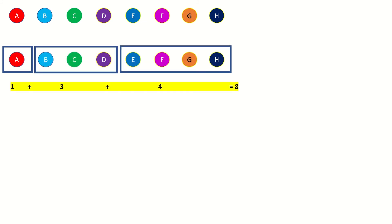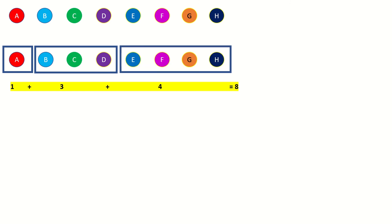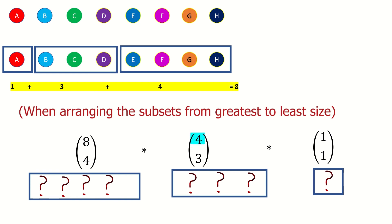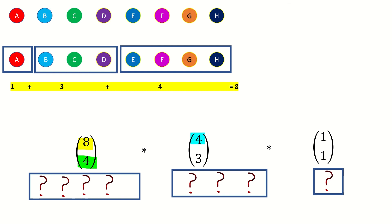What if we had 8 elements to partition according to 1+3+4? We could start by finding the number of ways to pick the subset of 4 — that would be 8 choose 4. Then, for each of those ways, there are 4 choose 3 ways to arrange the remaining 4 elements into the subset of 3, and then 1 choose 1 way to arrange the remaining 1 element into the subset of 1. So that would be 8 choose 4 times 4 choose 3 times 1 choose 1. Notice that the top number in each factor is the previous top number minus the previous bottom number.